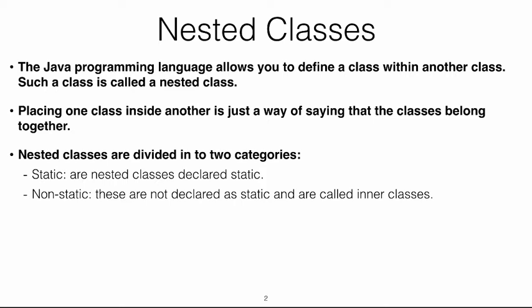Nested classes are divided into two categories. If you define a class inside another class and that class is static, it is called a static nested class. If it is not static, we refer to it as an inner class. The static keyword means the attribute or method declared as static exists at the class level — it doesn't need an instance of that class to exist.